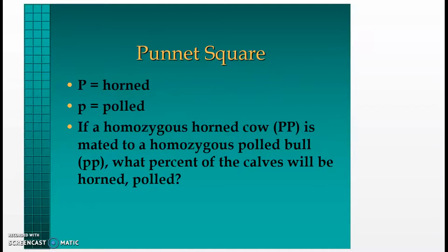The Punnett square method: uppercase P equals a horned animal and lowercase p represents a polled animal. If a homozygous horned cow with two uppercase P's — homozygous meaning both traits are the same — is mated to a homozygous polled bull with two lowercase p's, what percent of the calves will be horned or polled?